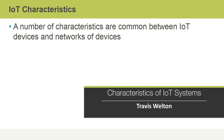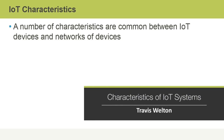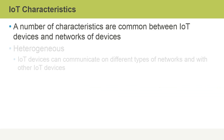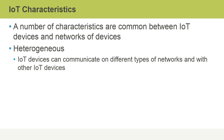In this video, we'll take a look at some of the characteristics of Internet of Things systems. Even though the Internet of Things is about connecting many different devices together and to the Internet, there are a number of characteristics that are in common between Internet of Things devices and networks of devices.